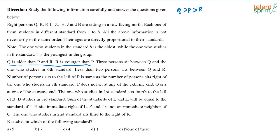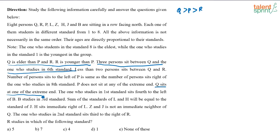Three persons sit between Q and the one who studies in 6th standard. Also, Q sits on one of the extreme ends. So this is the starting point I am going to try with — Q is at one end of the row.